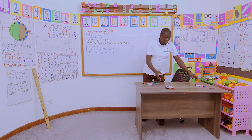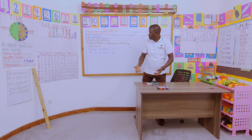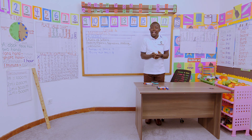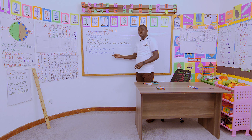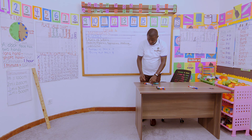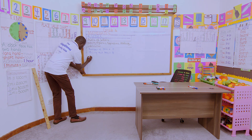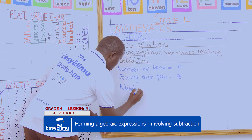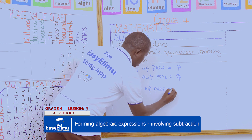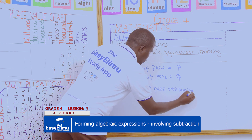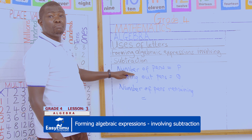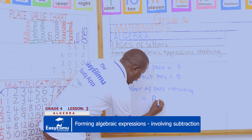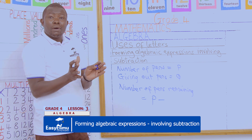Remember, initially we had the number of pens represented by letter P. Now I would like to give out just a portion — I am giving out a number of pens represented by letter Q. So I pick the initial number of pens, that is P, and I am taking away the number of pens Q.